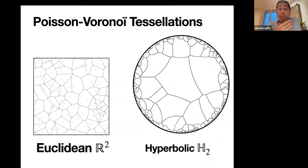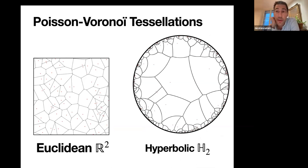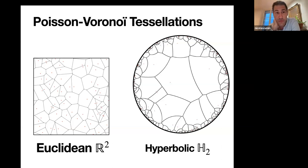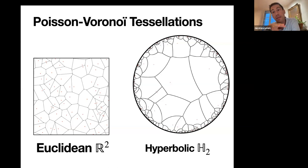Now we will be interested in Poisson Voronoi tessellations. In your space, you sample a Poisson process of points and then consider the Voronoi tessellation. These are ubiquitous objects in stochastic geometry, studied by many, many people — if you Google Poisson Voronoi tessellation you will find thousands of papers. I will focus on the Euclidean case where the underlying space E is R², endowed with the Lebesgue measure, and the hyperbolic plane H², endowed with its hyperbolic area measure. You see two realizations of Poisson Voronoi tessellations, which are really different because the spaces are really different.